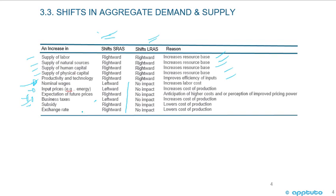Expectation of future prices rising leads to a rightward shift in short-run aggregate supply, with no impact on the long-run. An increase in business taxes is a leftward shift in short-run aggregate supply — it's an increase in cost — with no impact on the long run. An increased subsidy is rightward. An increase in the exchange rate makes domestic currency make imported inputs less expensive, so it's a rightward shift in short-run aggregate supply, with no impact in the long run.